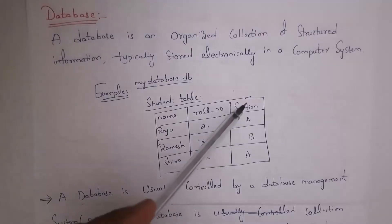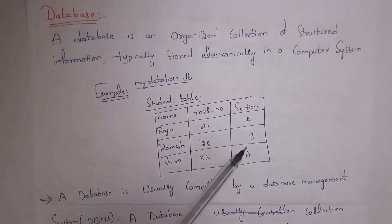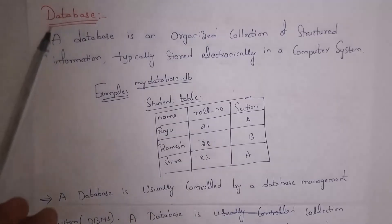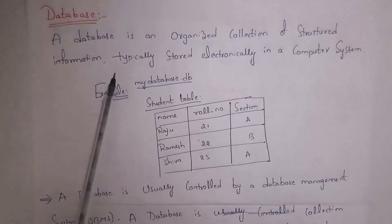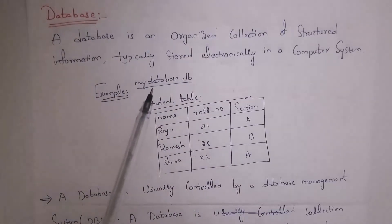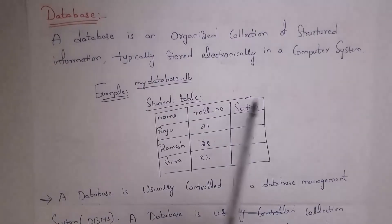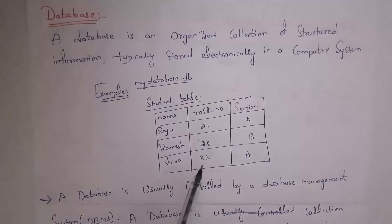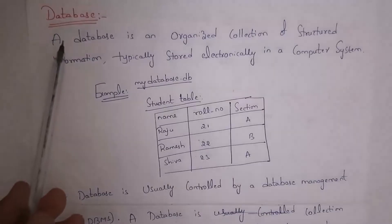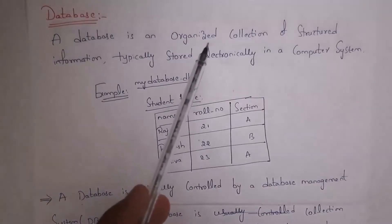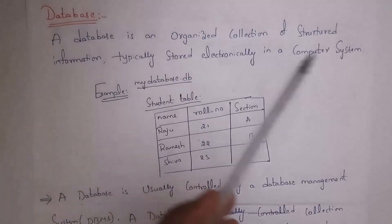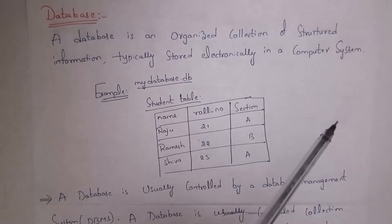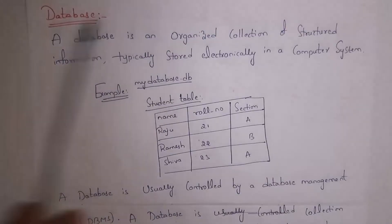Organized collection means in a database we store data in an organized format — all names in one place, all roll numbers in one place, and sections in one place. Structured information means data is stored in structured format like tables. A database is an organized collection of structured information typically stored electronically in a computer system.